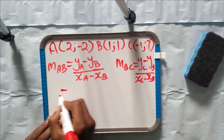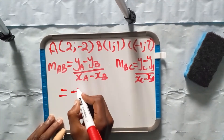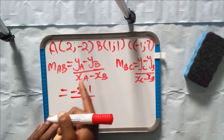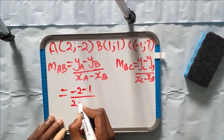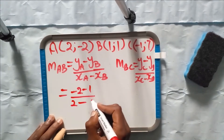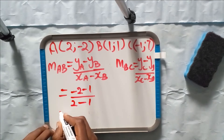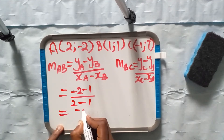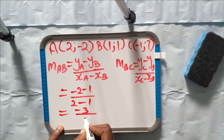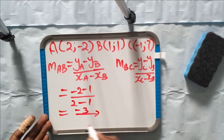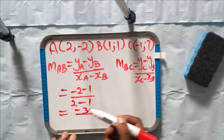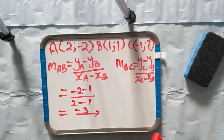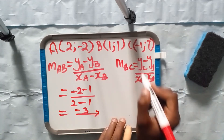Substituting: y_A is -2 and y_B is 1, so the numerator is -2 minus 1. x_A is 2 and x_B is 1, so the denominator is 2 minus 1. That gives us -3 over 1, which equals -3.